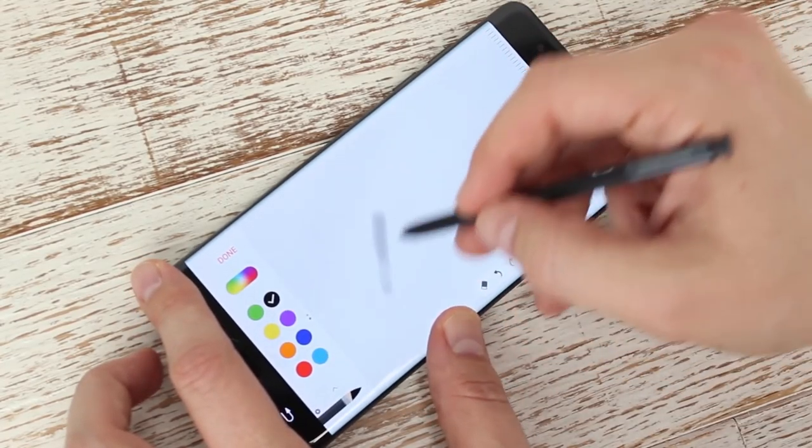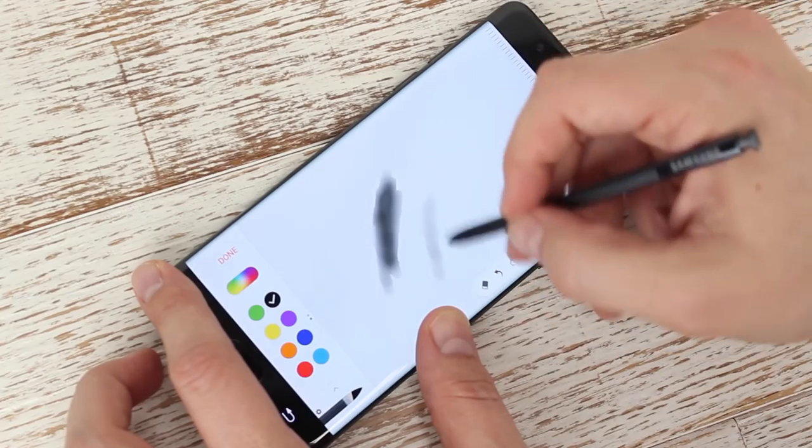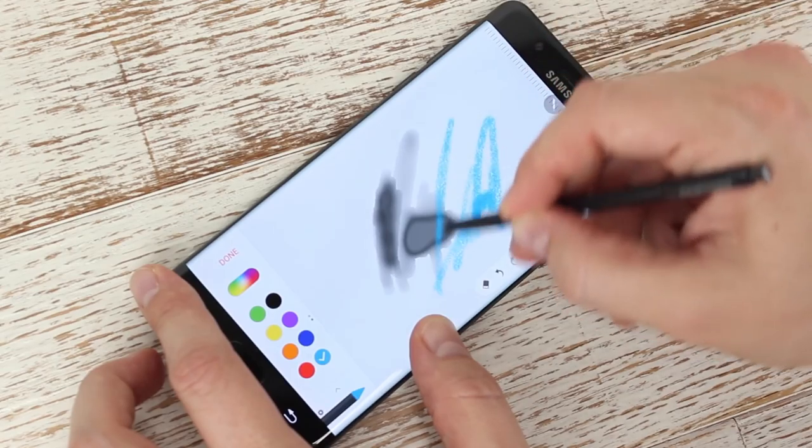Artists will be happy to know that the new S Pen features 4096 levels of pressure sensitivity, which is double the pressure sensitivity of previous generations. Painting with a thick or thin brush is as easy as just pressing a little bit harder or softer.